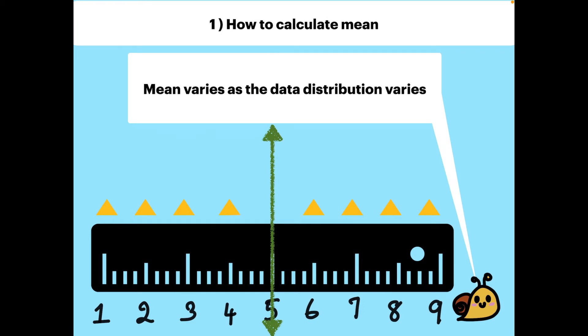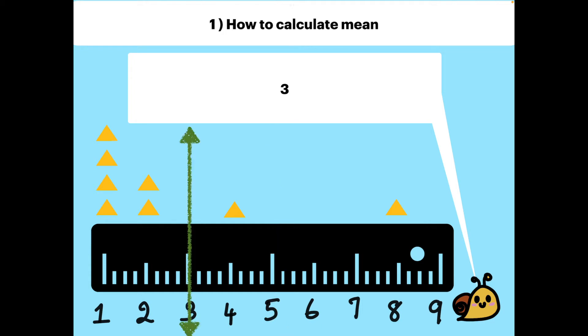Mean varies as the data distribution varies. Let's distribute our data and look at the mean. When we calculate the mean, it is 3 here.